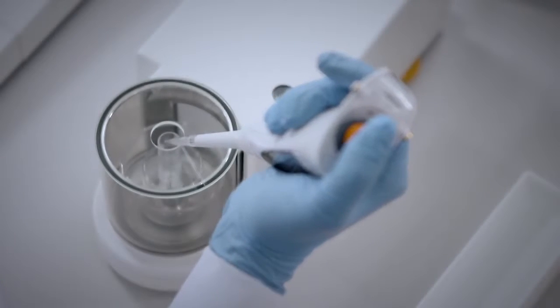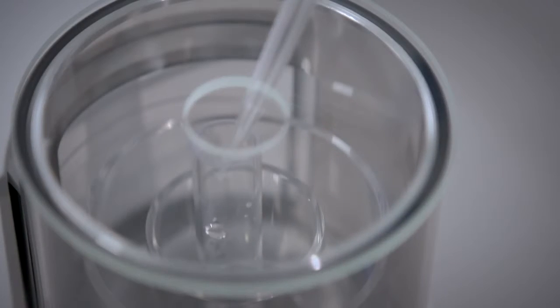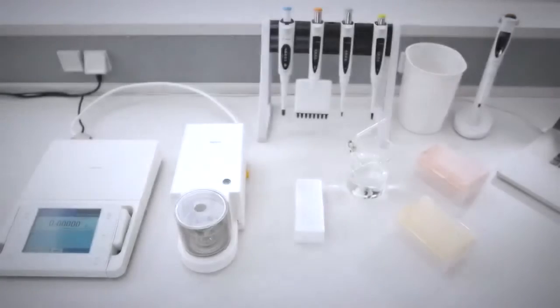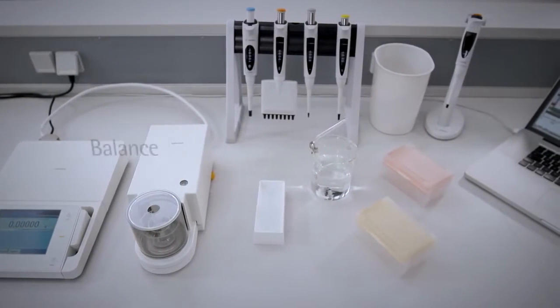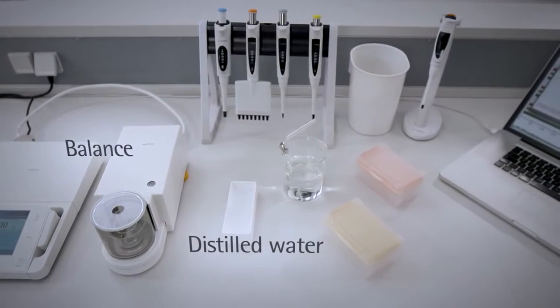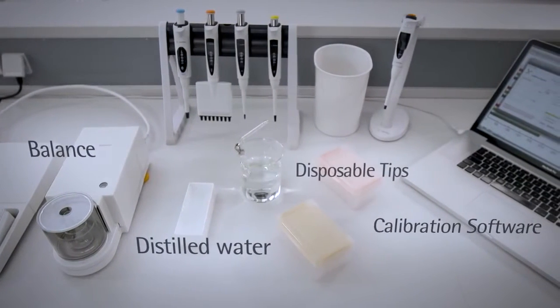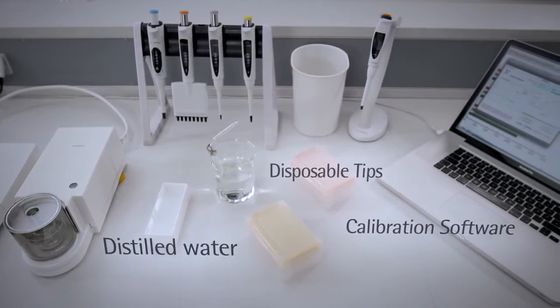One of the key aspects of pipette calibration is equipment. To successfully ensure your pipette's accuracy and precision you will need a balance, distilled water, calibration software as well as disposable tips for your pipettes.